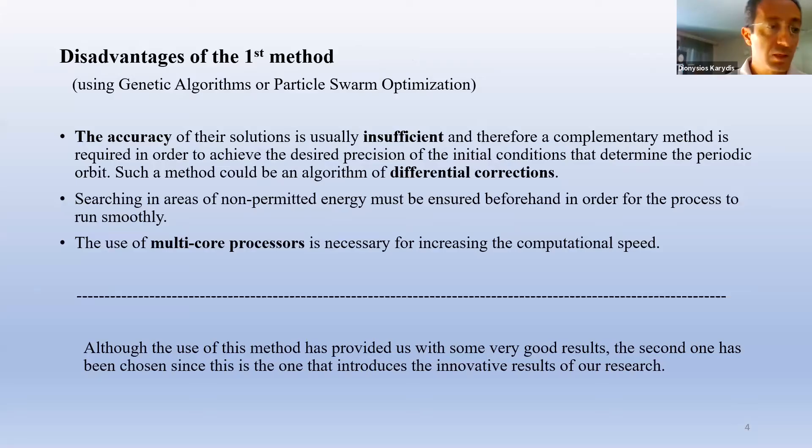The main disadvantage of the first method is that the accuracy of the solutions is usually insufficient and therefore a complementary method is required in order to achieve the desired precision of the initial conditions that determine the periodic orbits. Such a method could be the differential corrections approach.